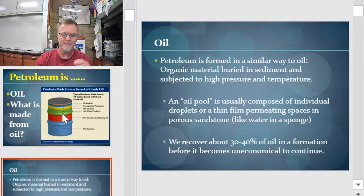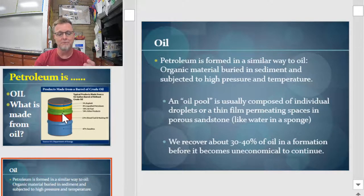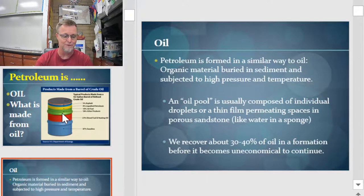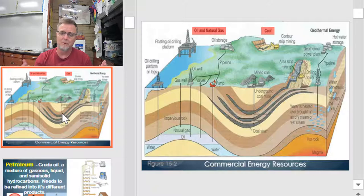Petroleum is formed when organic material is buried in sediment and subjected to high pressure and temperature, and then an oil pool forms as individual droplets or thin films permeate spaces in rock like sandstone. We can recover about 30 to 40% of oil in a formation before it really becomes uneconomical to continue. It's kind of like drinking a milkshake through a straw that's too skinny — all you end up with is a headache from sucking and nothing coming out. This gives you an idea of how oil pools form underground and how we tap into them with an oil well.